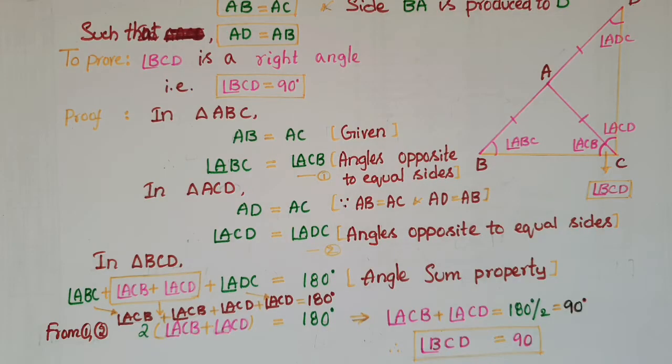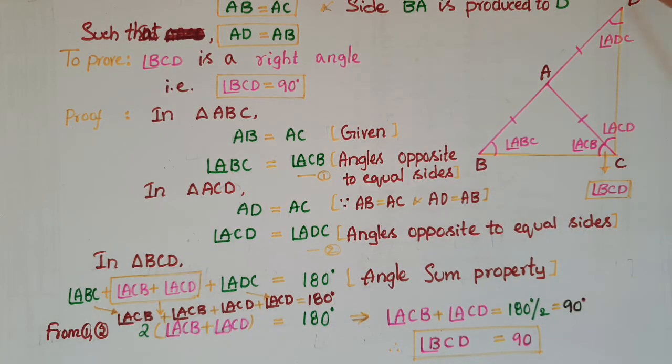Now in triangle BCD, the sum of all angles is 180 degrees. So angle ABC plus angle ACB plus angle ACD plus angle ADC is equal to 180 degrees by angle sum property.